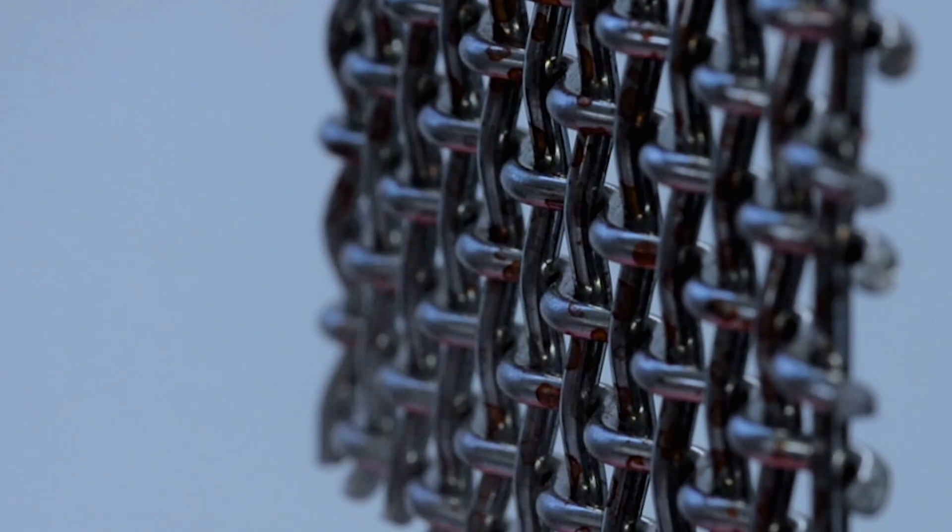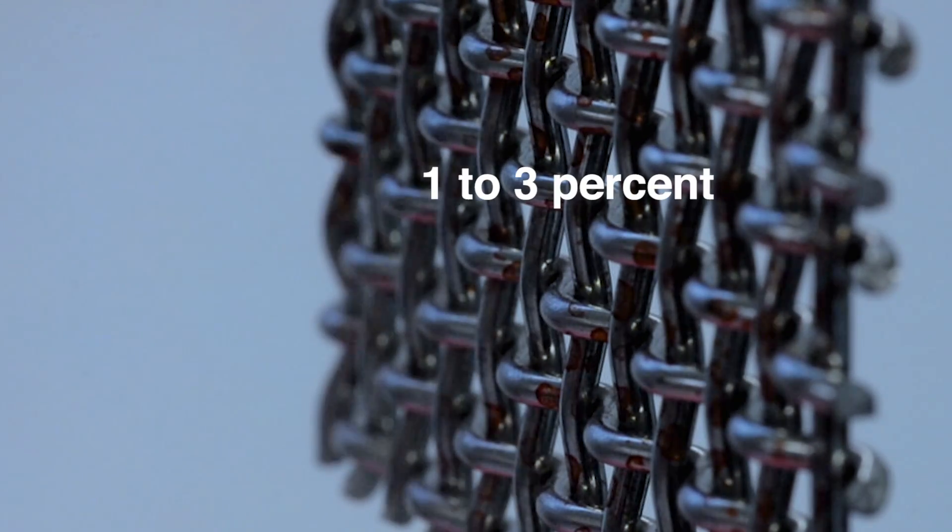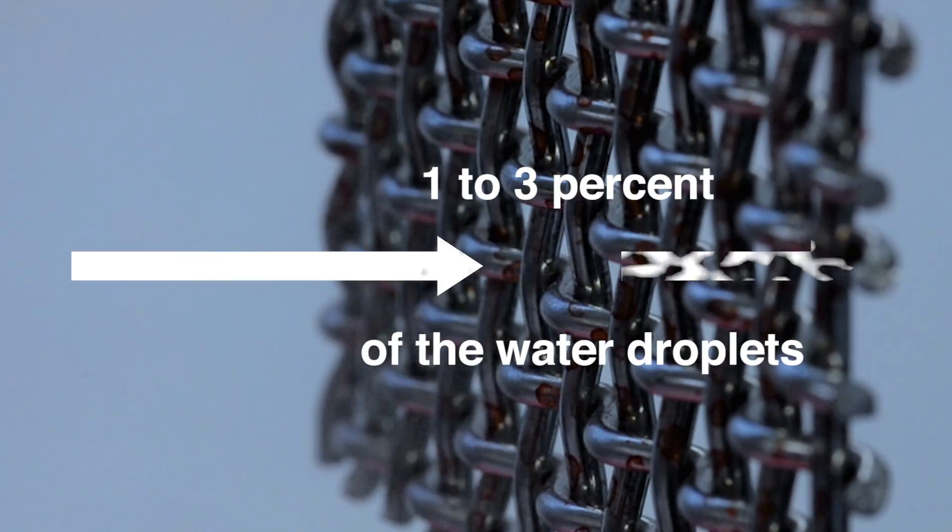The motivation to develop this new system stems directly from the inefficiencies of current natural fog harvesting systems. Existing systems, which generally consist of a plastic or wire mesh hung vertically in the path of fog banks, only capture about 1-3% of the water droplets that pass through them.